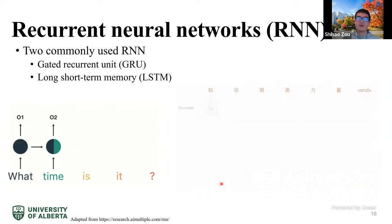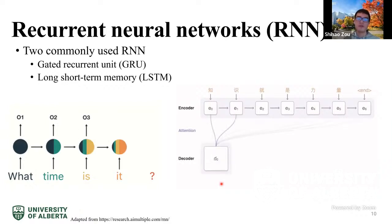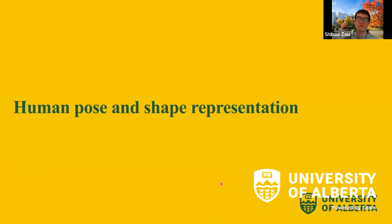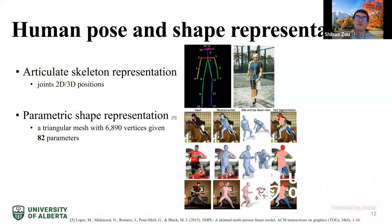We have introduced the basics of deep learning and the three most commonly used models. Next, we cover human pose and shape representation. The simplest is the articulate skeleton representation, shown in the image on the right. Another is the parametric shape representation — a triangular mesh with more than 6,000 vertices, determined by only 82 parameters.